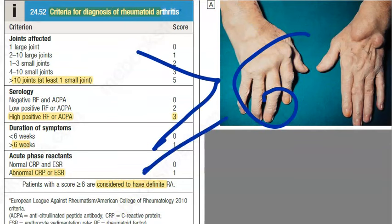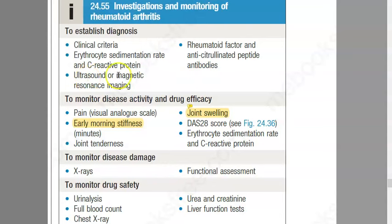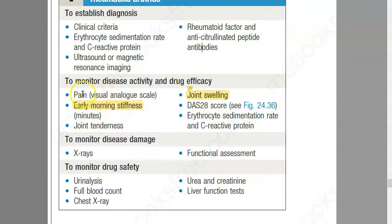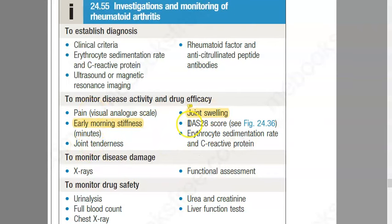In rheumatoid arthritis, symmetric joints are involved — if the left side is affected, the right is also affected. These people will have pain, tenderness, and swelling of the joints, and this pattern will be symmetrical on both the left and right sides.